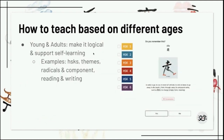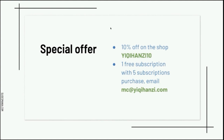For young adults and adults: make it logical and support self-learning. There's a grammar system for Chinese characters through radicals and components, original story research, and for adults who often learn based on HSK levels, we have HSK levels on the website. Writing sheets are tailored more for adults so they can complete a full sheet, and there's also a quiz on the website to help review everything.